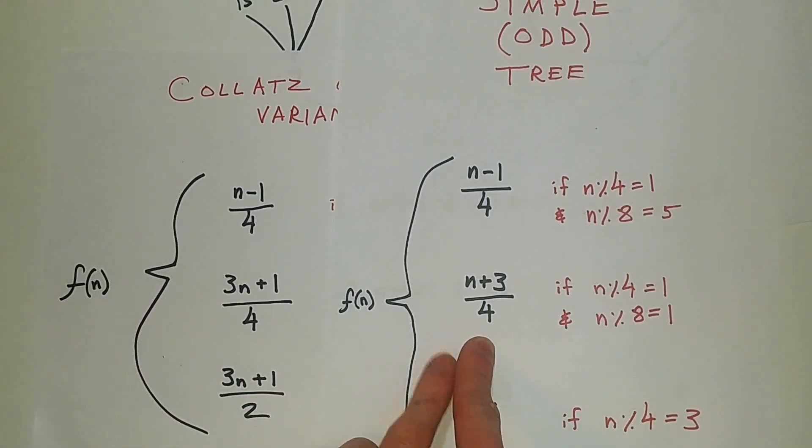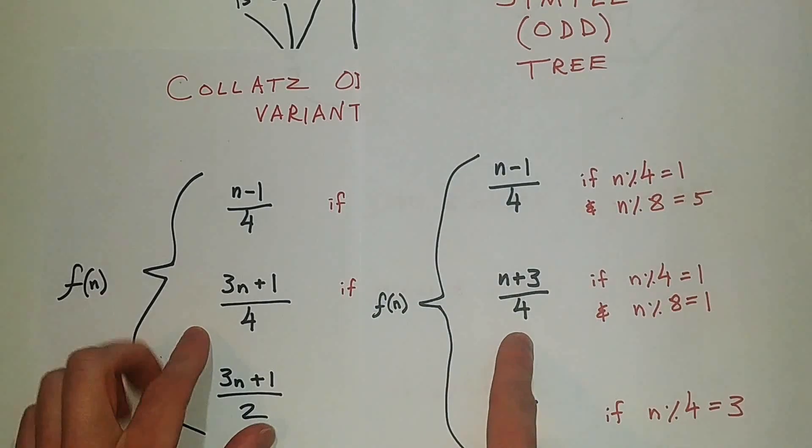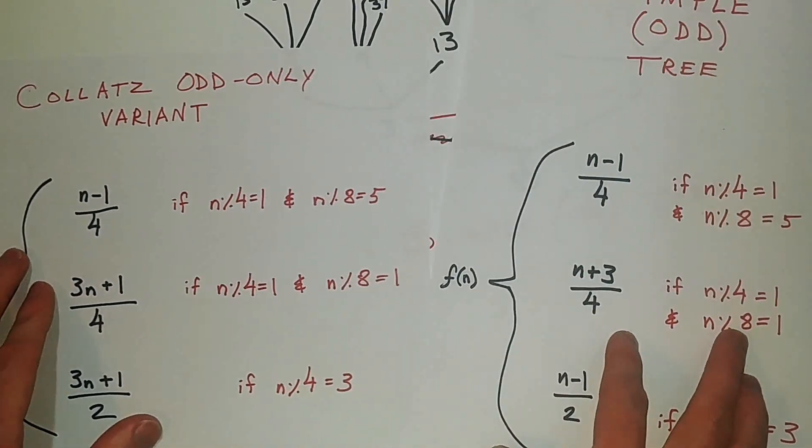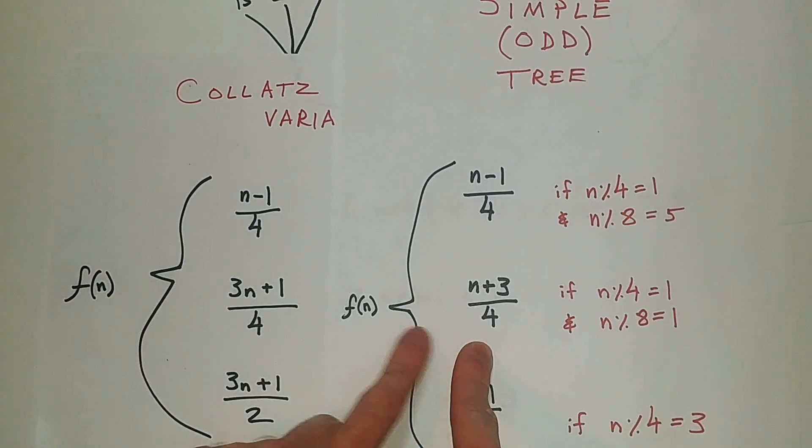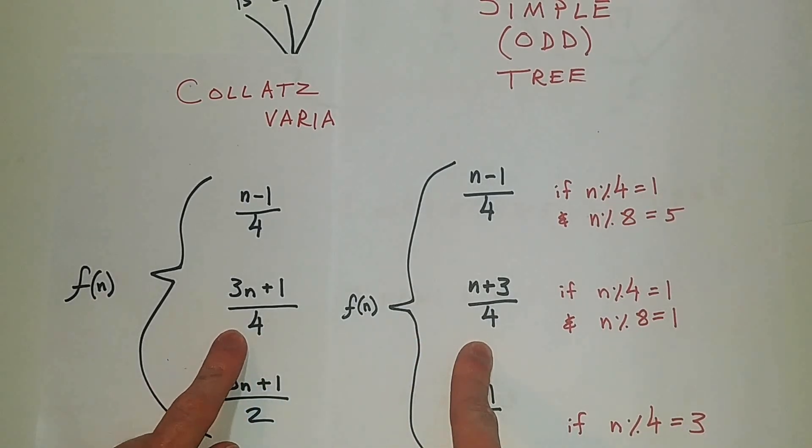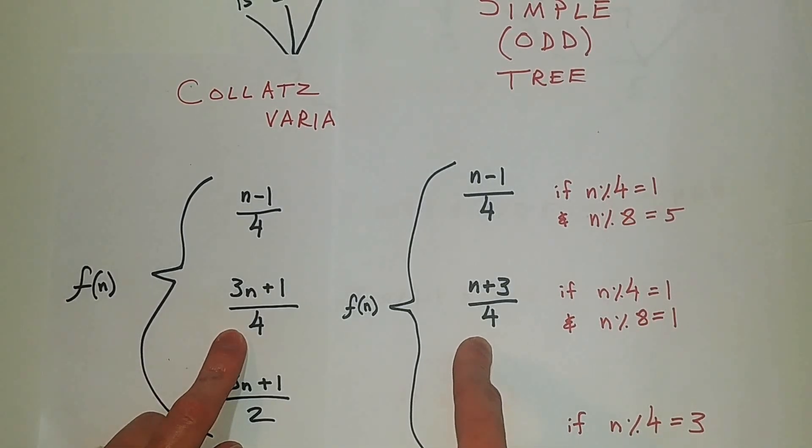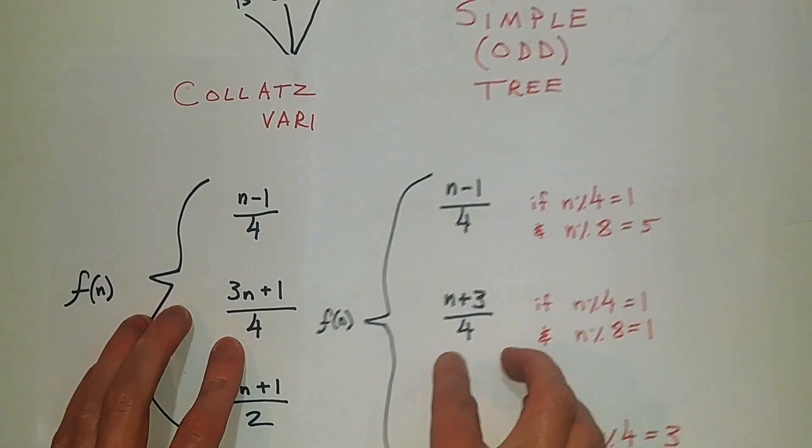Basically, all the numbers for which modulo 4 is equal to 1, and modulo 8 is equal to 1, and plus 3 to 4, we're going to detach them and reattach them according to 3n plus 1 divided by 4. And the only thing we have to make sure is that we are not reconnecting to any of our children.